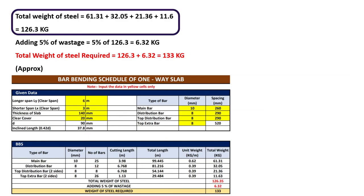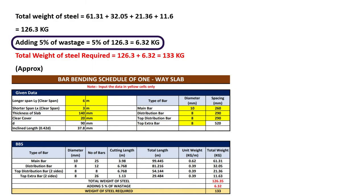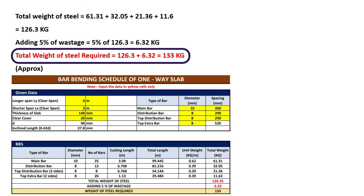Finally, the total weight of steel required for this slab is the sum of weight of main bars, distribution bars, top distribution bars, and top extra bars, which totals 126.3 kg. After adding 5% for wastage, the total weight of steel required is 133 kg.